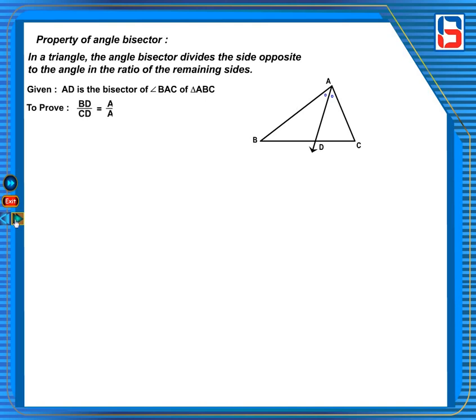To prove: BD upon CD is equal to AB upon AC.